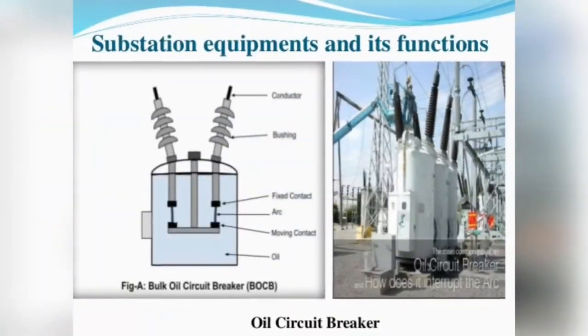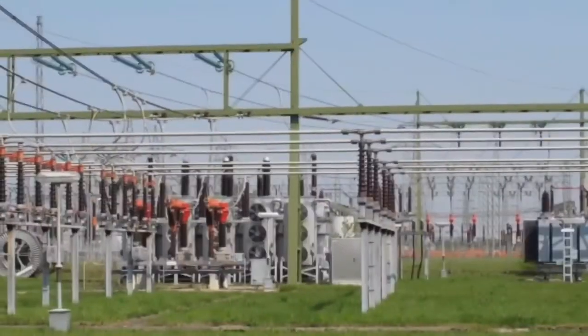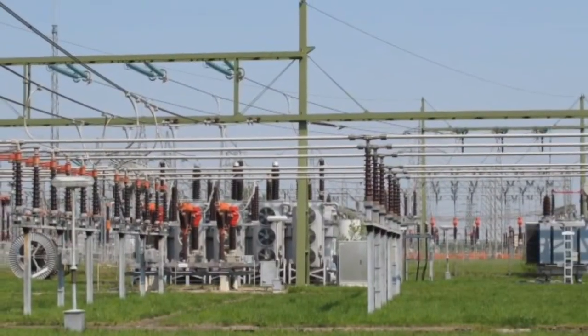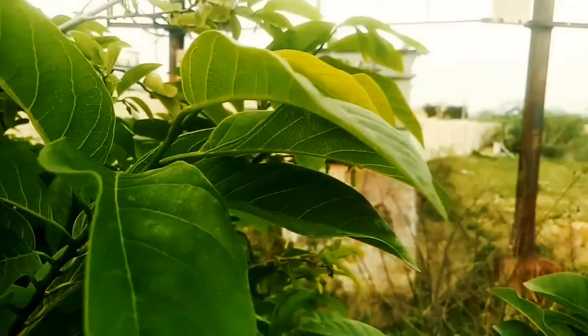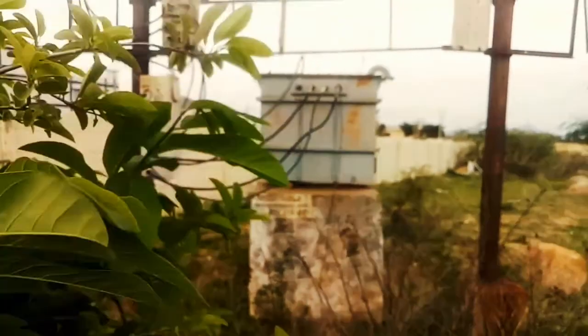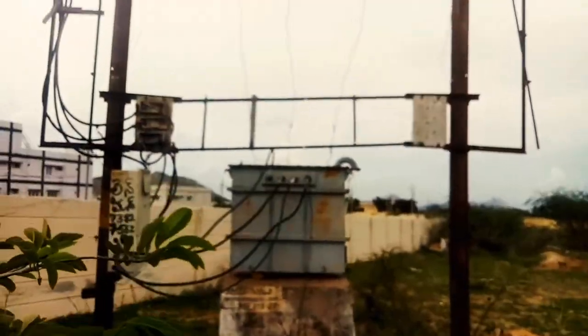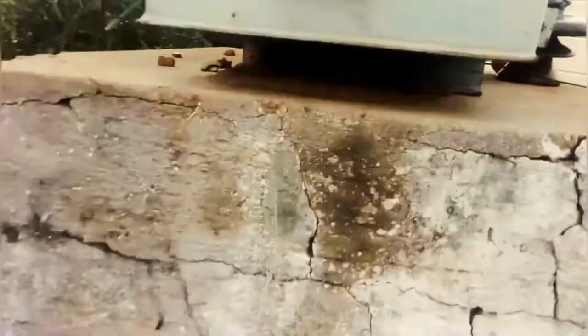Now we are going to give a live explanation of pole-mounted and plinth-mounted substations, i.e., distribution substations. Now you are watching a plinth-mounted substation — a plinth is constructed, then a distribution transformer is provided, i.e., 11kV by 440V, delta-star connection.